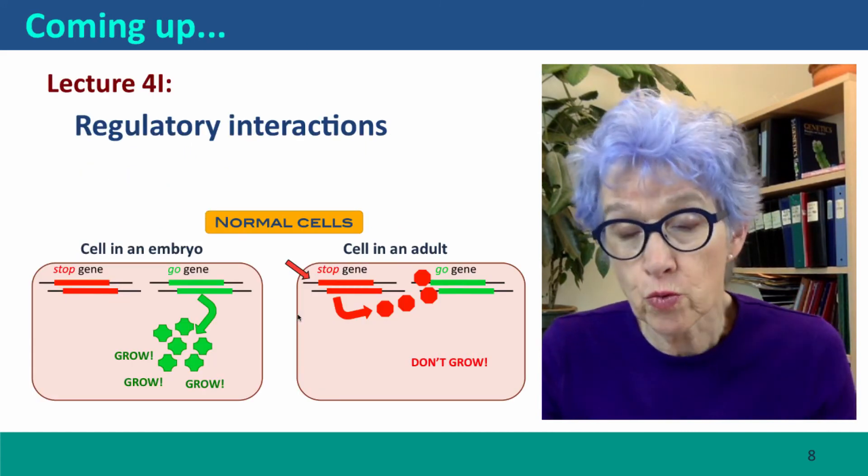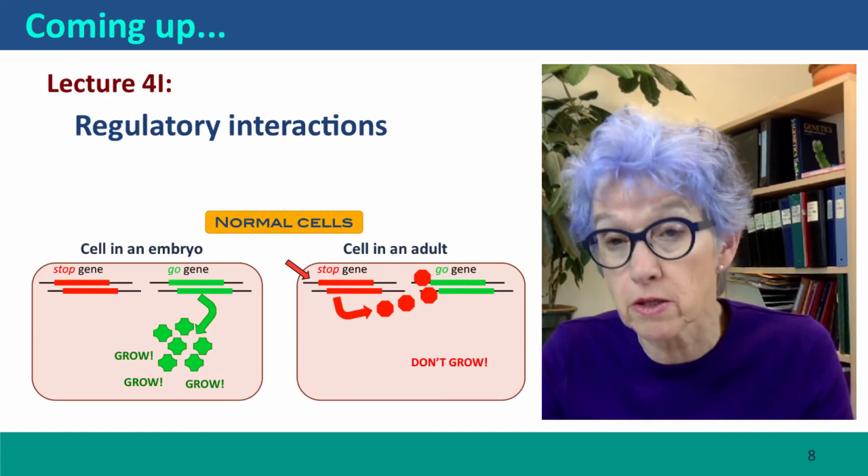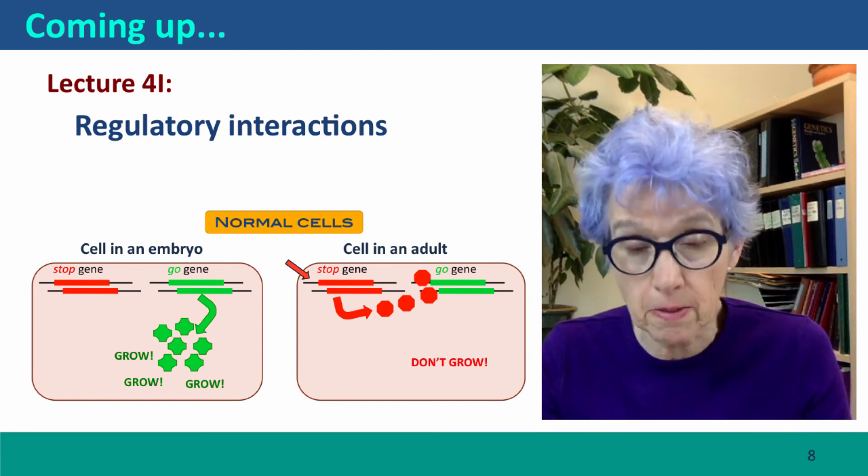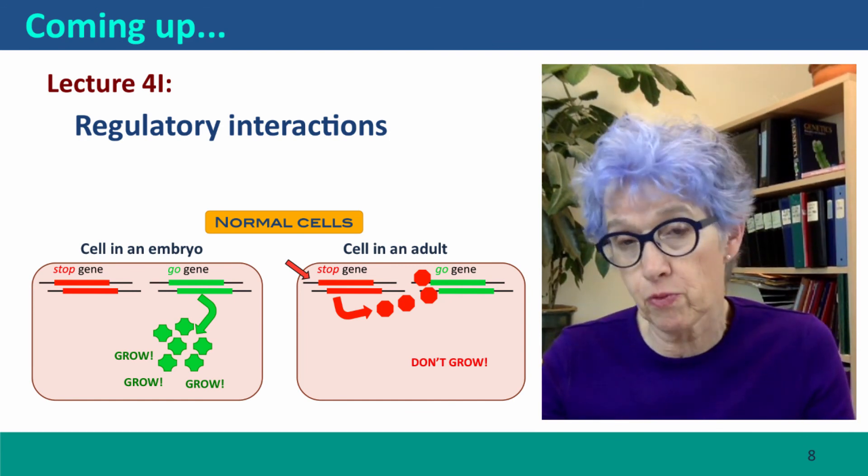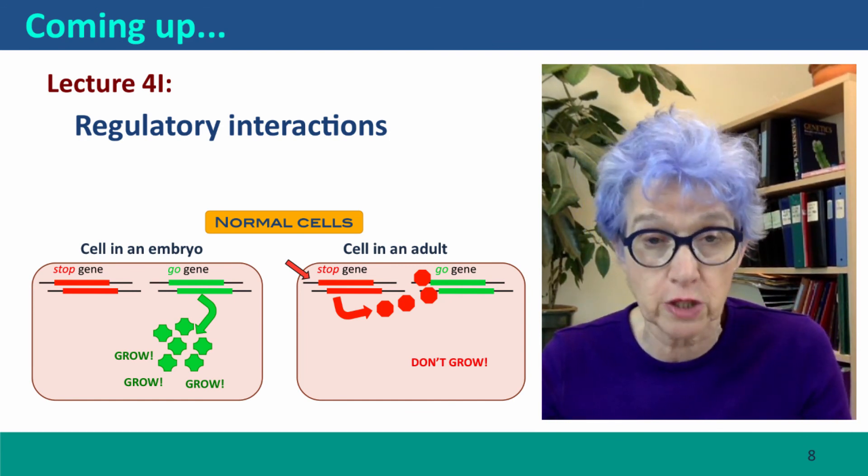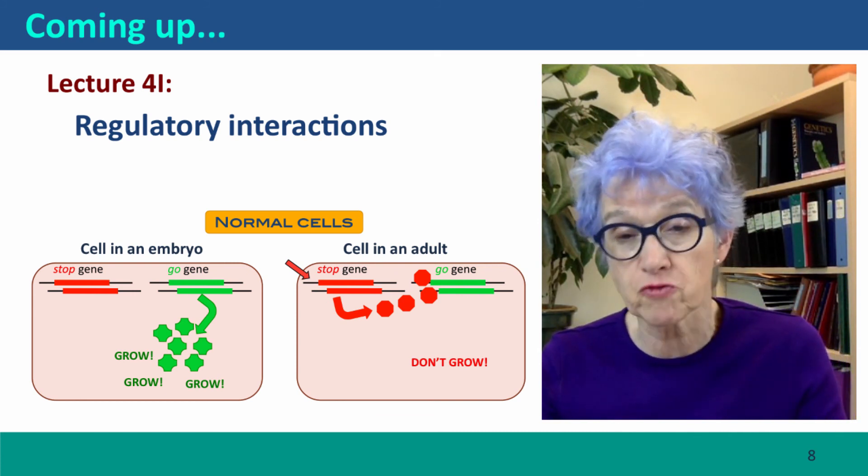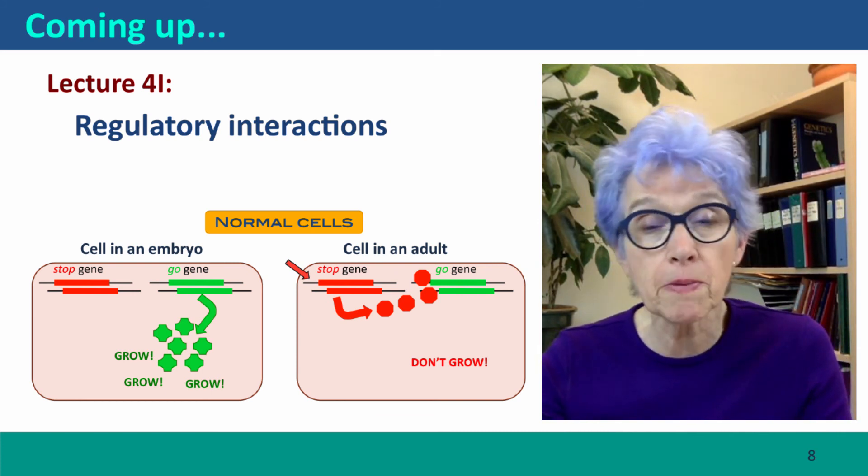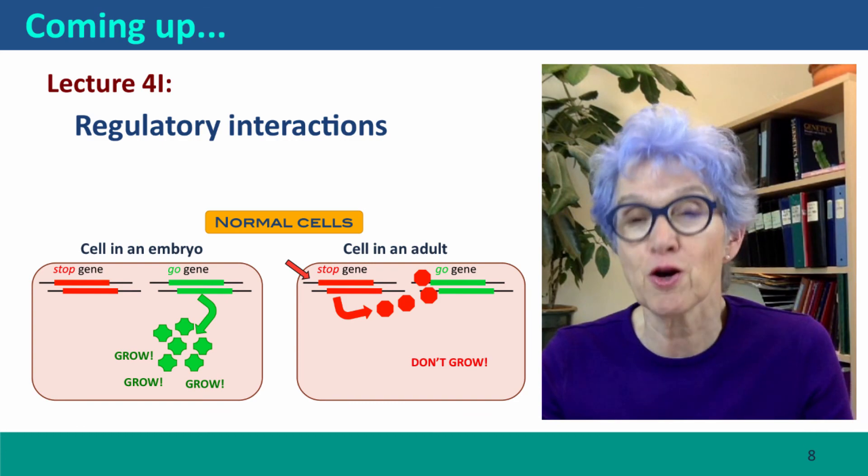Coming up next, we're going to move on to thinking about regulatory interactions. These are more complex to think about, but they're extremely important in all biological situations. And they're going to prepare us for the next step, which is to think about the genetics of cancer. I hope to see you there.